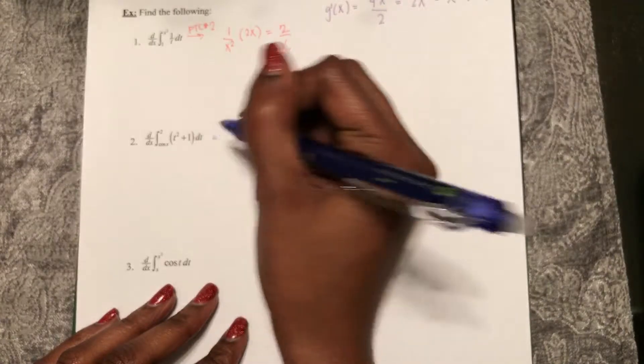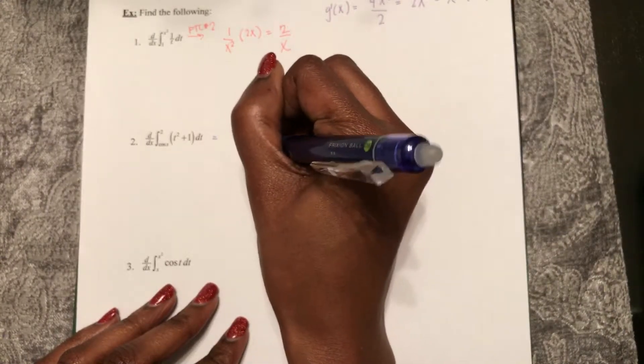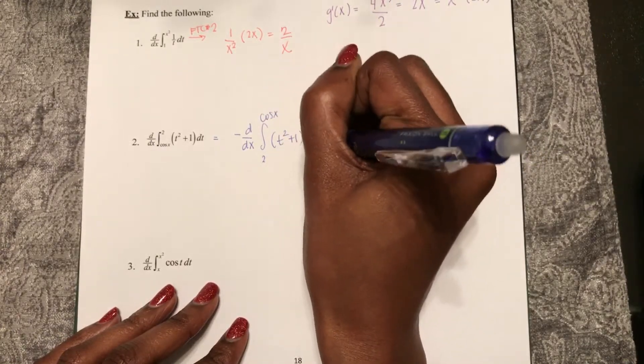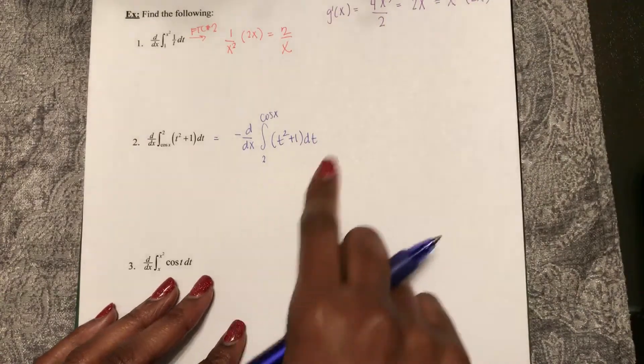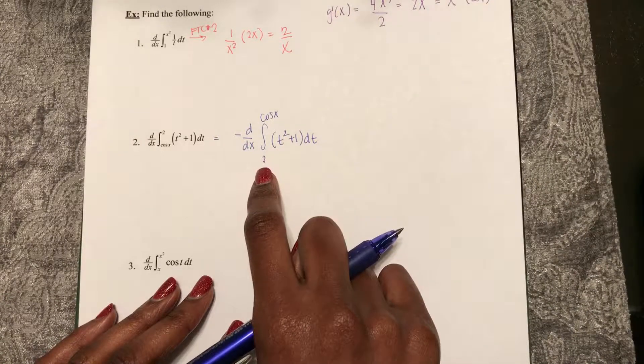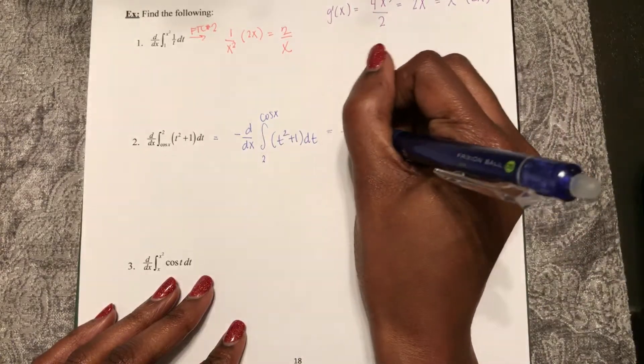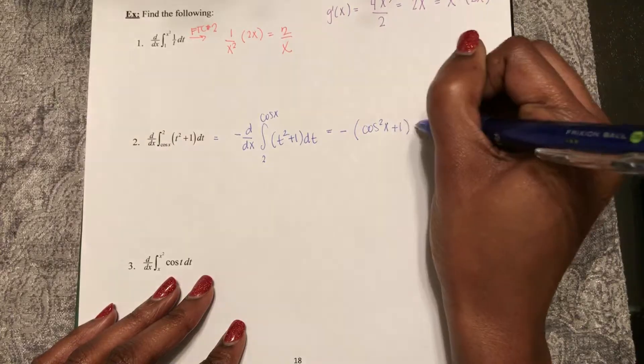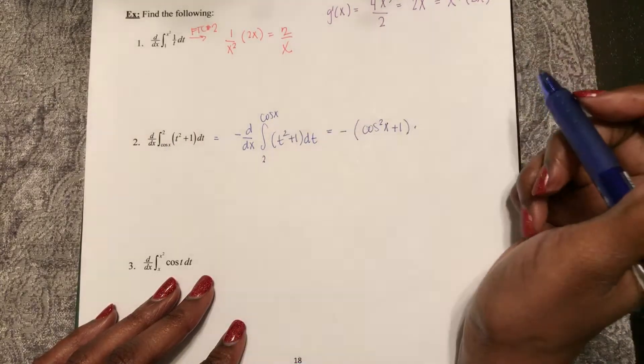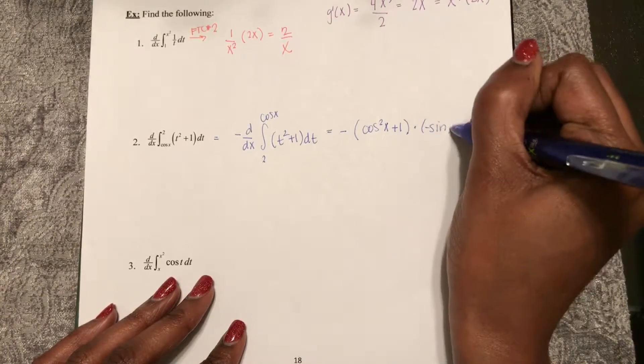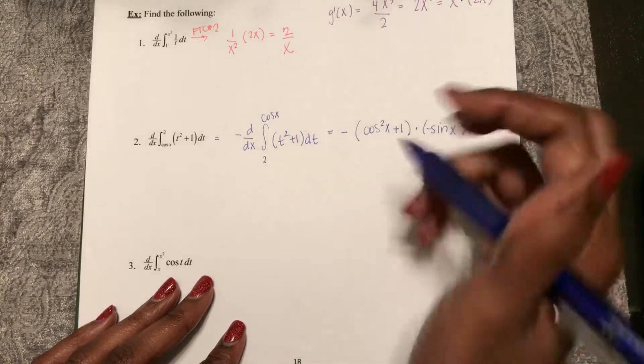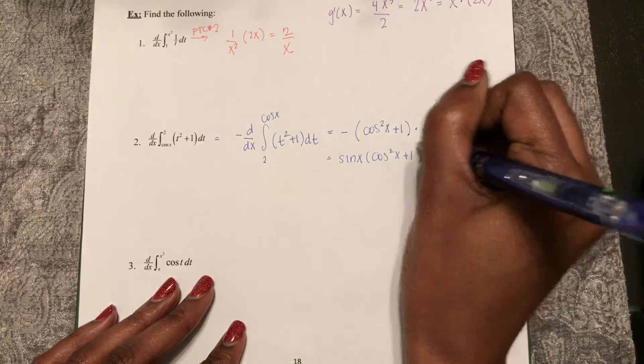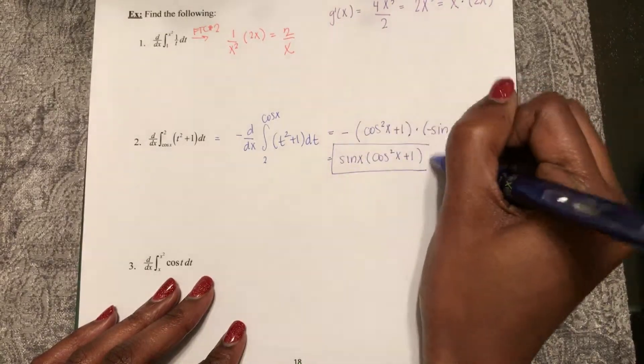So I'm going to use my properties of integrals and make it negative d dx integral from 2 to cosine x of t squared plus 1 dt. So now this is looking like FTC part 2 from a constant to a function. So this becomes negative cosine squared x plus 1 multiplied by the derivative of cosine, which is negative sine x. So these double negatives cancel out sine x times cosine squared x plus 1 using FTC number 2.